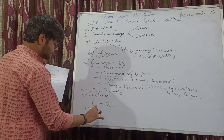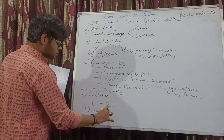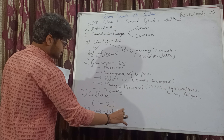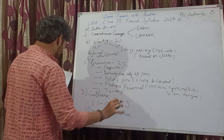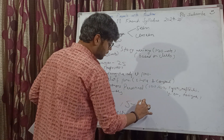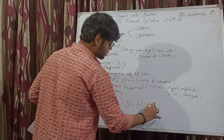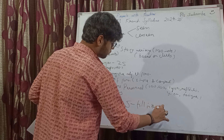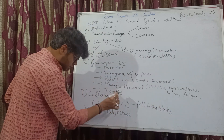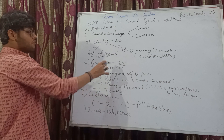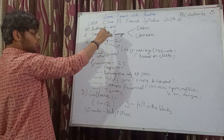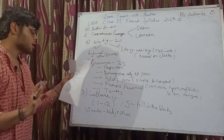10 marks will be subjective questions — 2 marks each — and the remaining 5 marks will be in the form of fill in the blanks. That totals 15. So the marks add up: 15 plus 25 is 40, plus 20 writing, plus 20 comprehension — 80 marks total for the written paper.